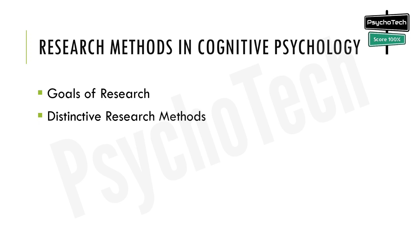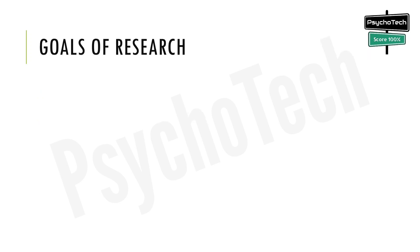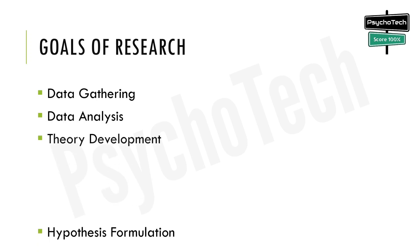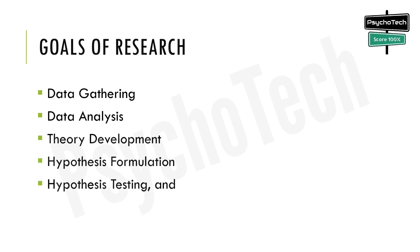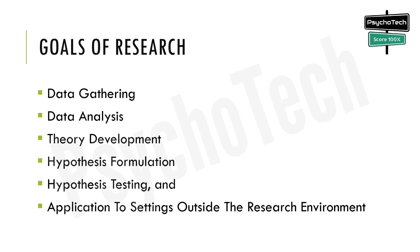To better understand the specific methods used by cognitive psychologists, one must grasp the goals of research in cognitive psychology. These goals include data gathering, data analysis, theory development, hypothesis formulation, hypothesis testing, and application to settings outside the research environment. Most cognitive psychologists also seek to understand the how and the why of thinking.